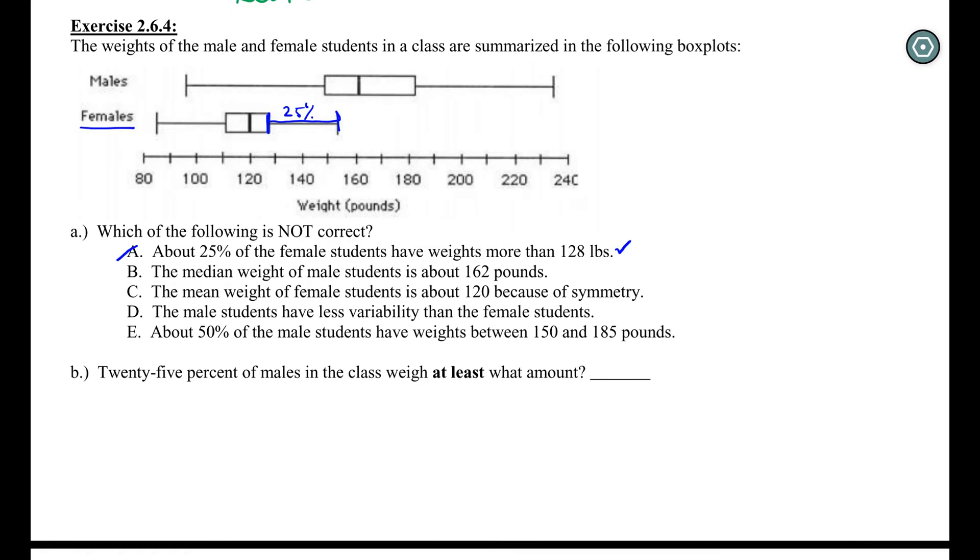B says the median weight for the male students is about 162. Okay, we're going to the males now. We're talking about the median is about 162. So we know that this is the median of the males. We look down and sure enough, it's pretty close to 162. Also true. Also got to get rid of that as an answer choice.